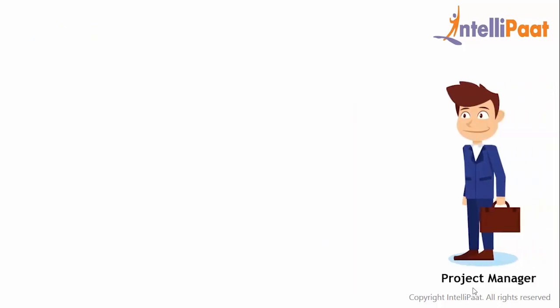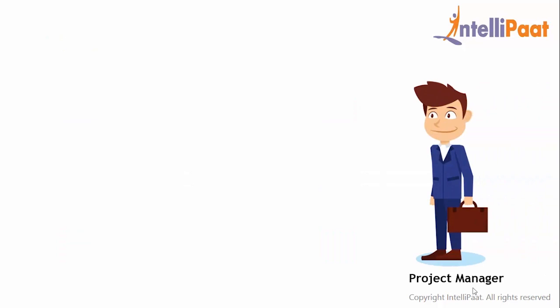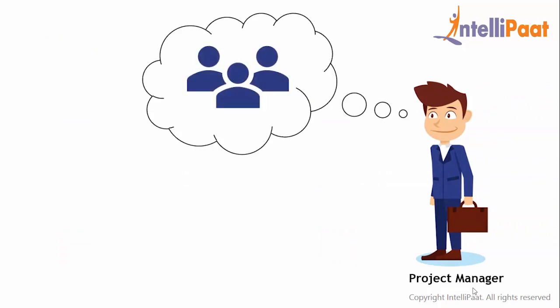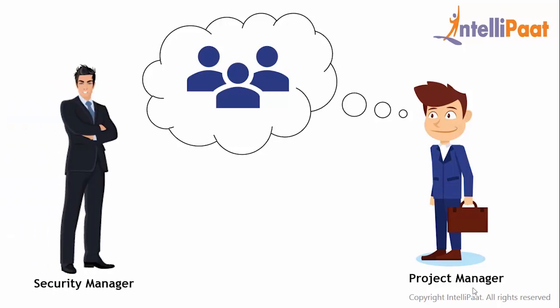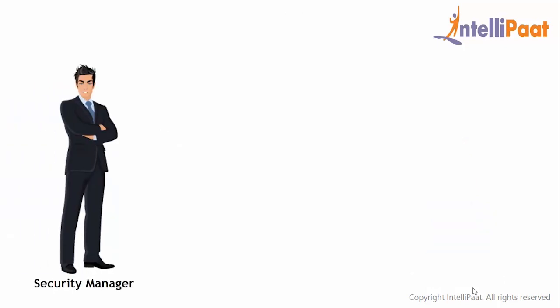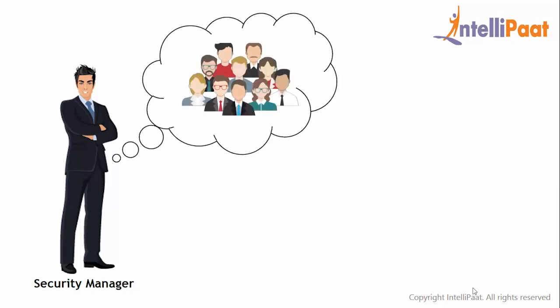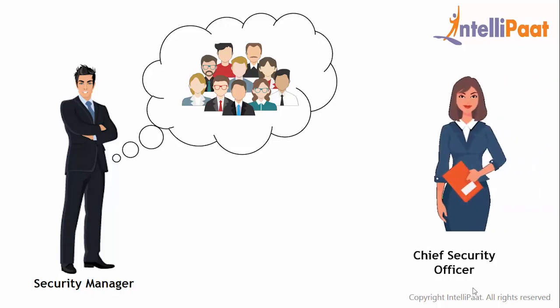John is the product manager for ABC Software Security Solutions and has been asked to work with the IT team to make some major changes in the software security process. John understands the security process but does not have a deep understanding of how the software and the process works. Hence, he must include somebody from the IT department — he includes Peter, who is the security manager. However, Peter needs to engage his software development team, and also include Nancy, the chief security officer.